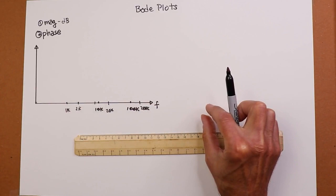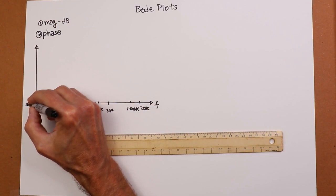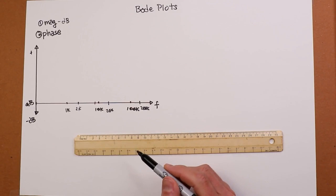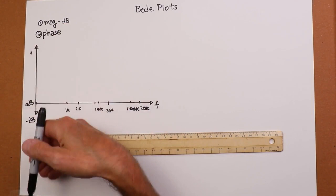And here we have decibels. Typically this would be 0 dB. This would be positive dB, and then as we went down, we'd have negative dB. Now for the phase part of this, we have the same kind of logarithmic frequency axis, and the phase would just normally be in degrees. We'd have positive degrees, negative degrees.